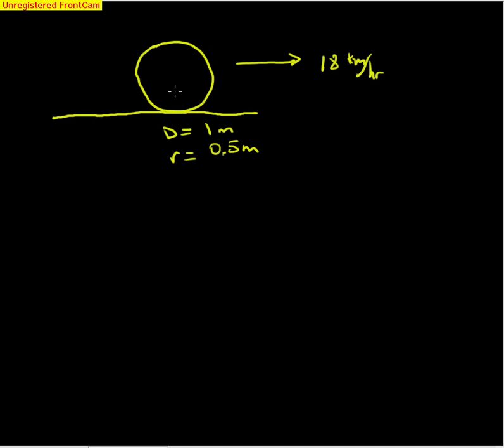Let's suppose the bicycle is moving with a linear velocity of 18 kilometers per hour. So the wheel on the bike has a radius of 0.5 meters, moving at a velocity of 18 kilometers per hour.